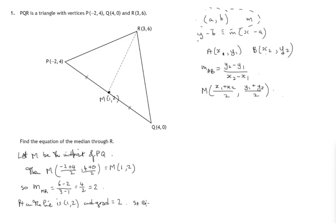So the equation of median is y minus b, that's y minus 2, equals m, that's 2, x minus a, which is just 1. And let's get rid of the brackets. y minus 2 equals 2x minus 2, add 2 to both sides, y equals 2x.